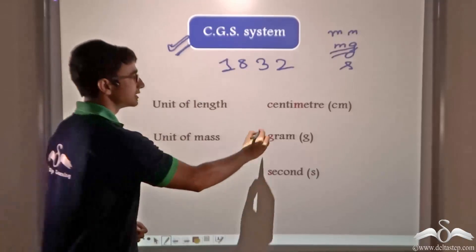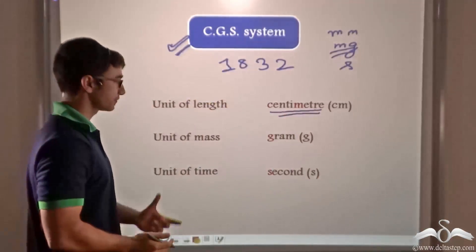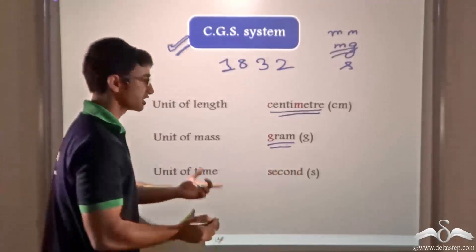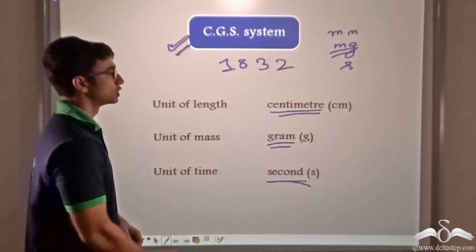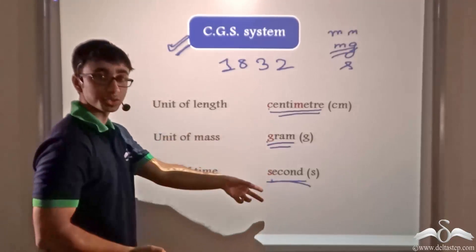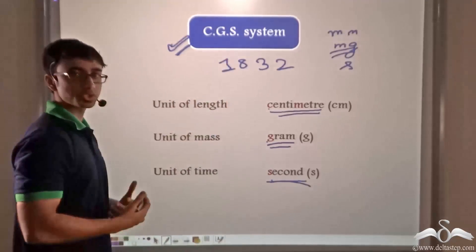why not use centimeters for measuring length, grams for measuring mass and seconds for measuring time. So taking the first letters of each of these units, the CGS system was formed.